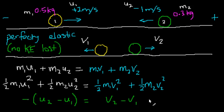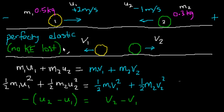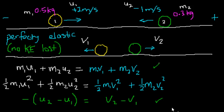This equation only works for the perfectly elastic case, when no KE is lost. Once we know this simpler equation, we can use it together with the original momentum conservation equation, setting aside the kinetic energy equation, to solve for v1 and v2. Now we have two equations and we can find both unknowns.